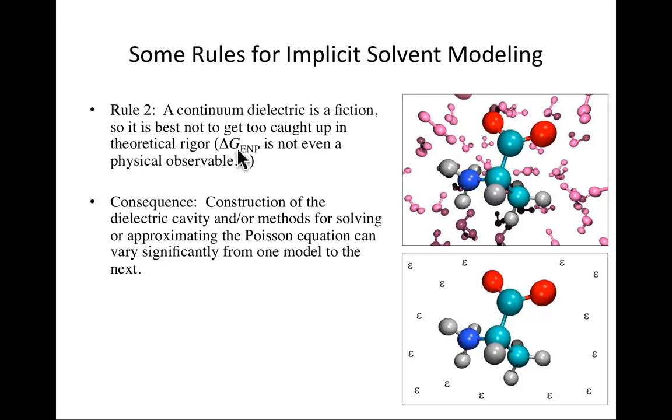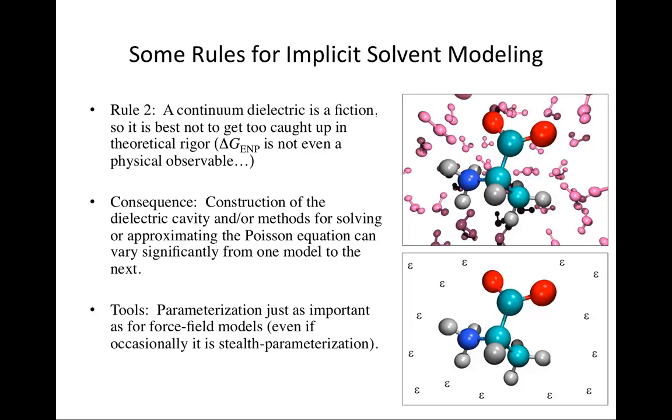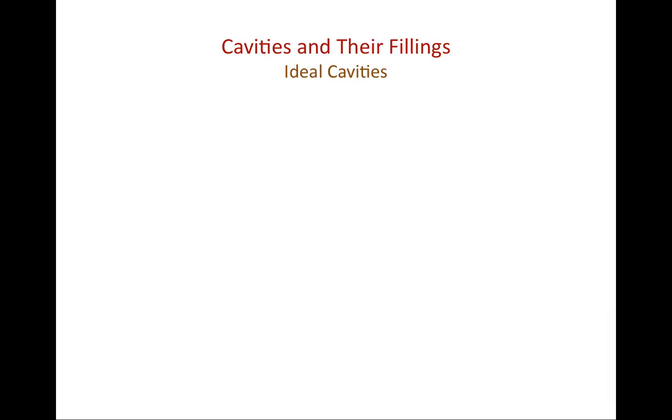Nevertheless, because it's not a physical observable, and because you can argue about these things, there are now many different methods out there for deciding what the cavity looks like that separates the dielectric from your solute, for solving or approximating the Poisson equation to get the potential that you need in your operator, and they might vary quite a bit from one model to the next. That's parametrization in some sense, and it's certainly just as important as force field models, although it's often swept under the rug, stealth parametrization. You claim you're invoking some sort of physical constants of the universe instead of actually optimizing anything.